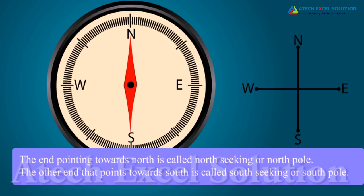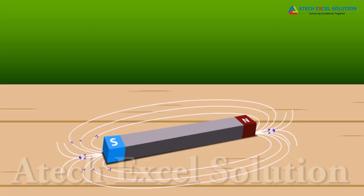We place a bar magnet on a white board, then sprinkle some iron fillings uniformly around the bar magnet. Upon tapping the board gently, the iron fillings arrange themselves in a pattern. This happens because the magnet exerts force on the surrounding area. A magnetic field exists in the region surrounding a magnet. The lines along which the iron fillings align themselves represent magnetic field lines.